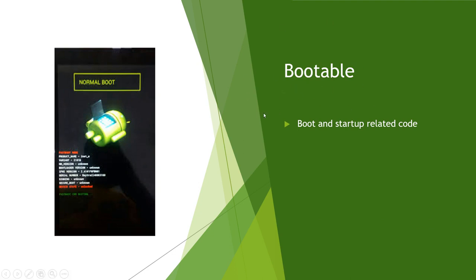Next there is a folder called Bootable. Bootable includes all the boot and startup-related code — how the Android system should boot, what should happen during boot. All these things are handled in this Bootable folder. It also includes Fastboot protocol support; all the step-by-step procedure for Fastboot is present in the Bootable folder.